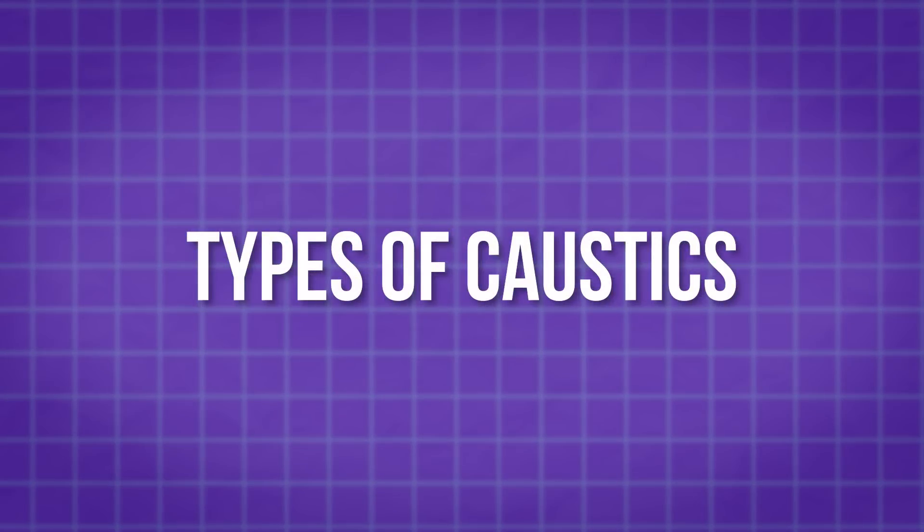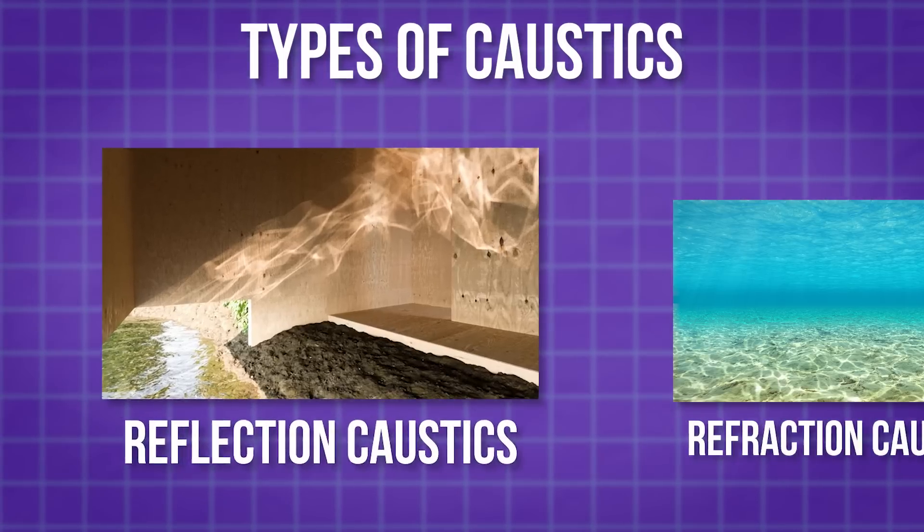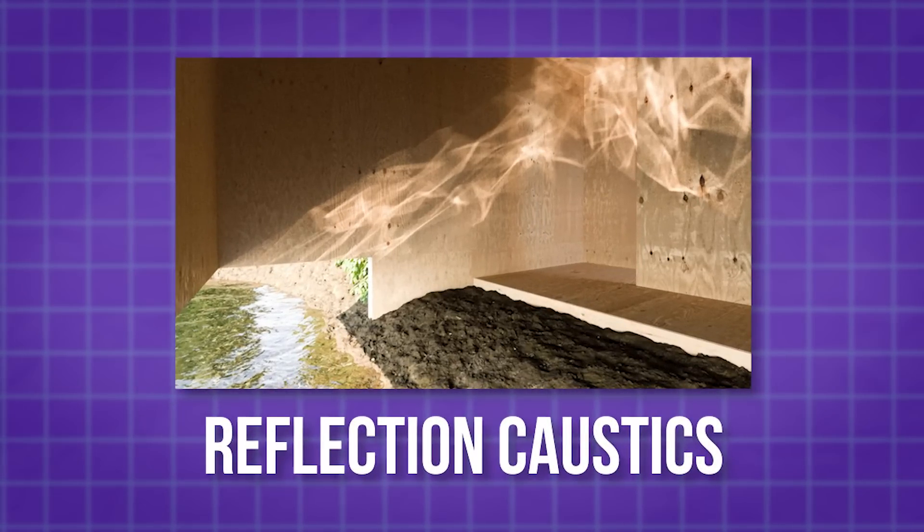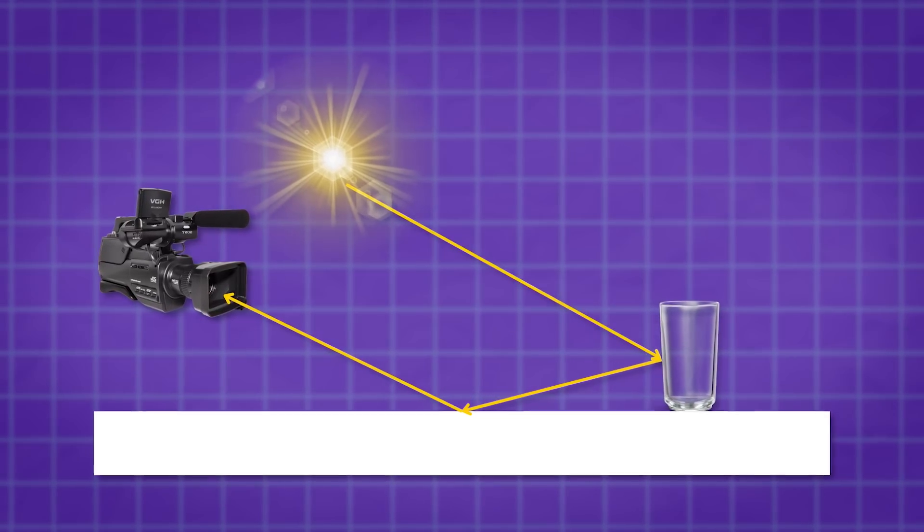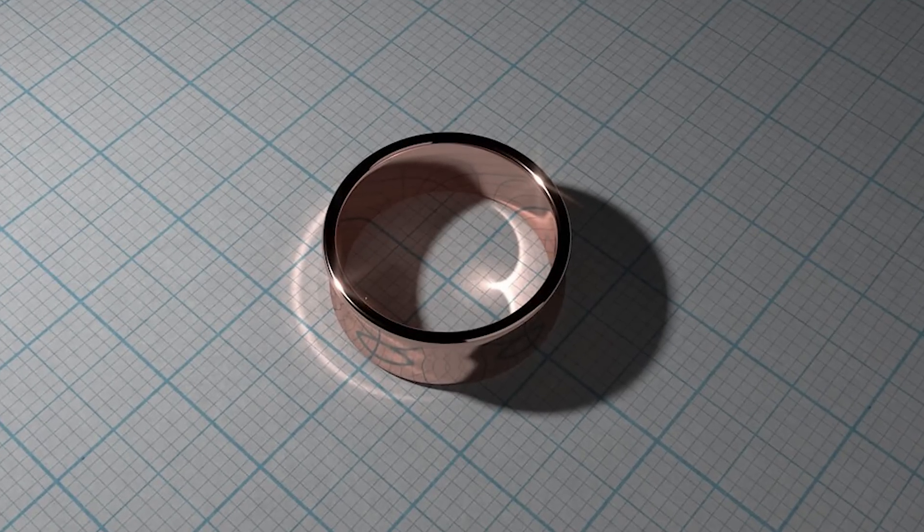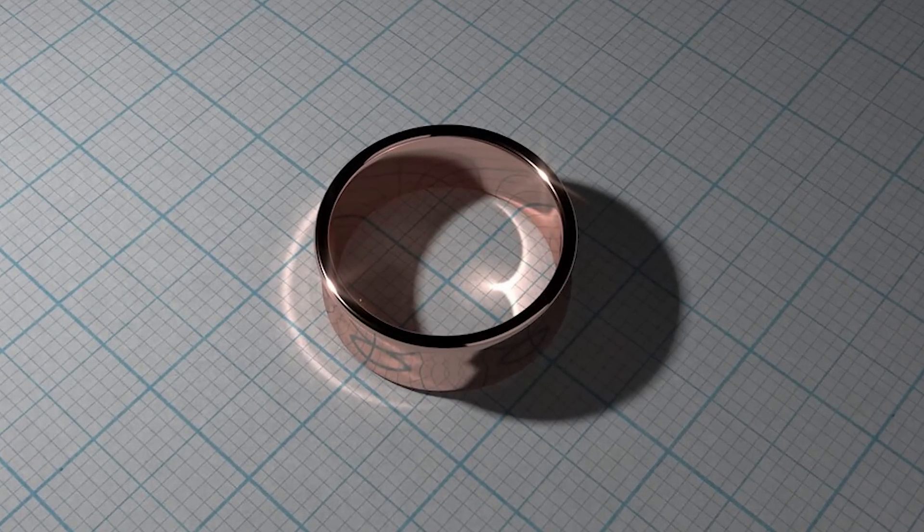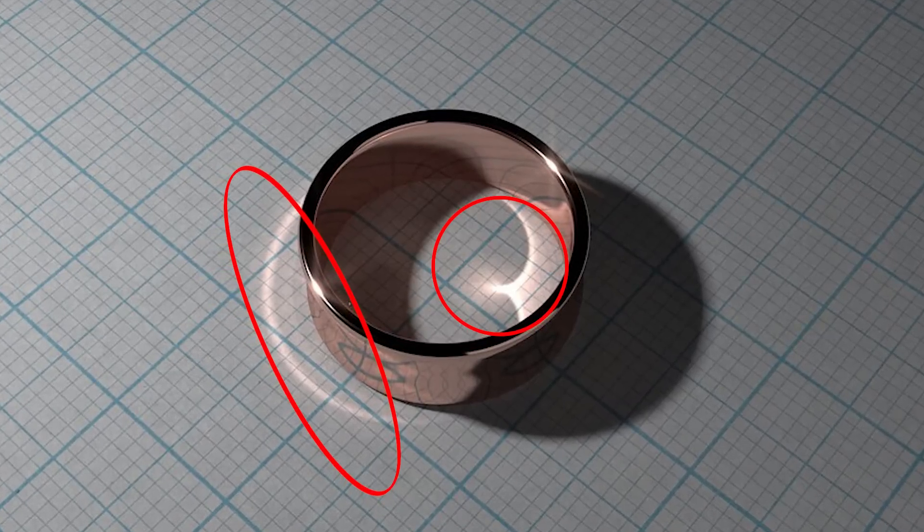So, to help you understand more, I have to let you know that there are two types of caustics. First of all, let's talk about reflection caustics. These occur when light rays reflect off a surface and concentrate in a certain area. For example, when light reflects off a shiny metallic surface, it can create bright spots or streaks on surrounding objects.